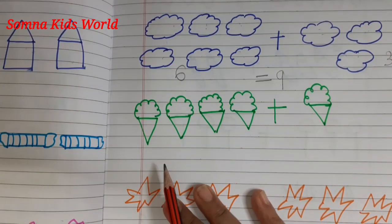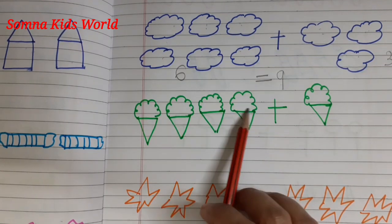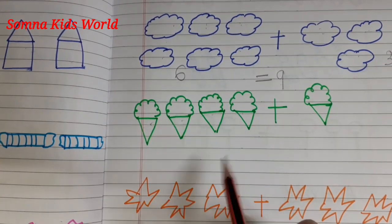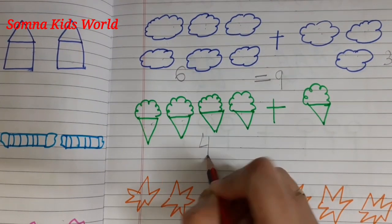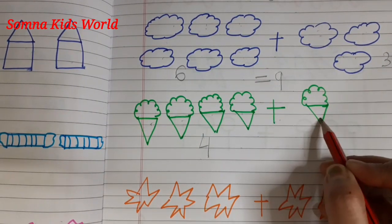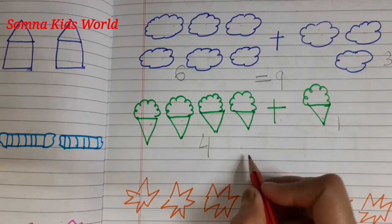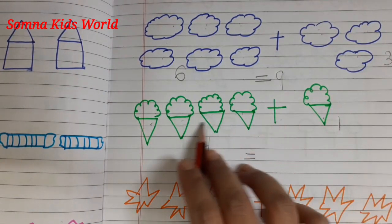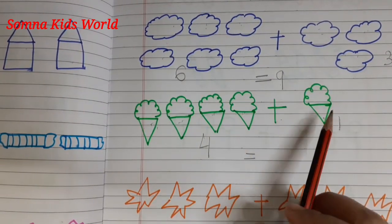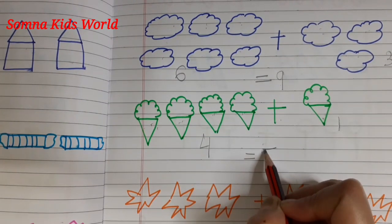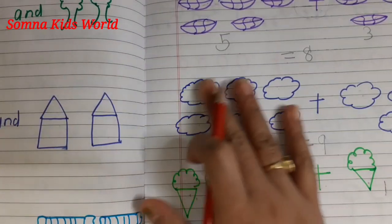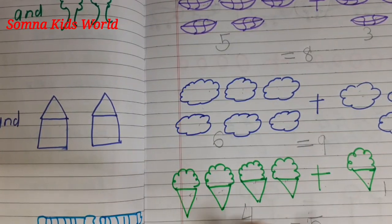Next, how many ice creams? Let us count first — how many ice creams on this side: one, two, three, four — four ice creams. Plus — plus means we are adding something — plus how many ice creams on this side? One. Now you need to count total how many ice creams: one, two, three, four, five. Total we are having five ice creams. Like this, you have to add, count, and put all together.